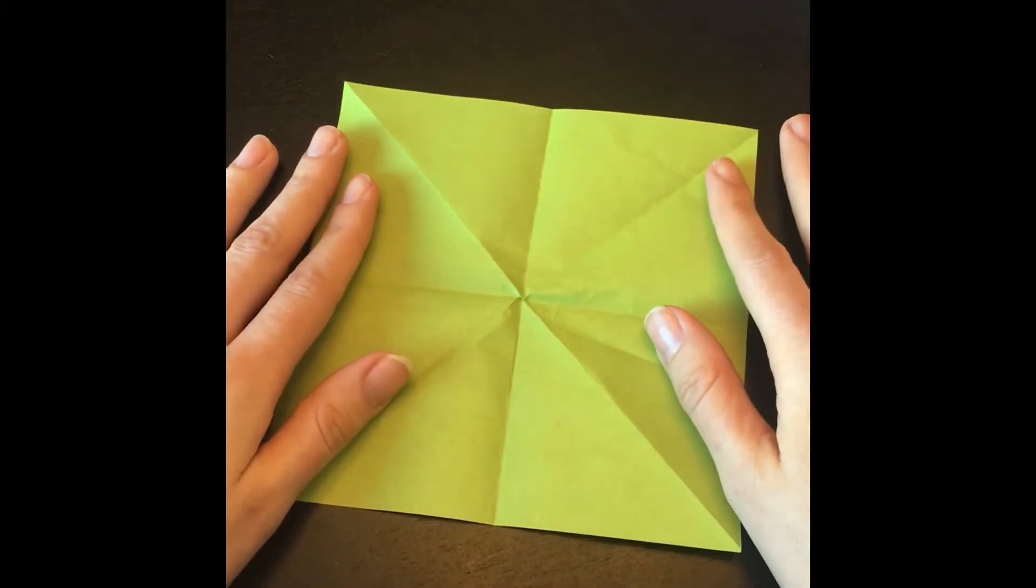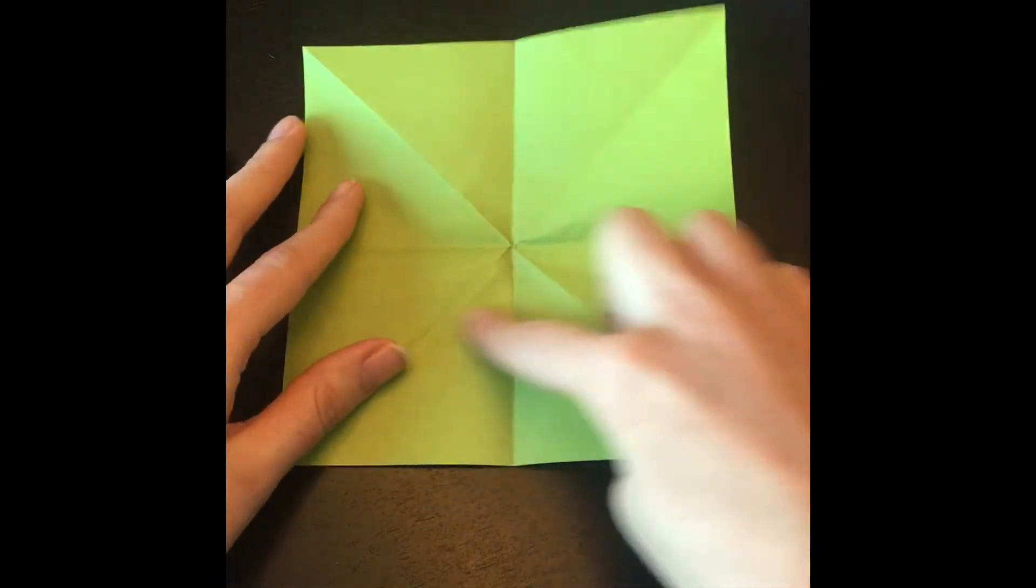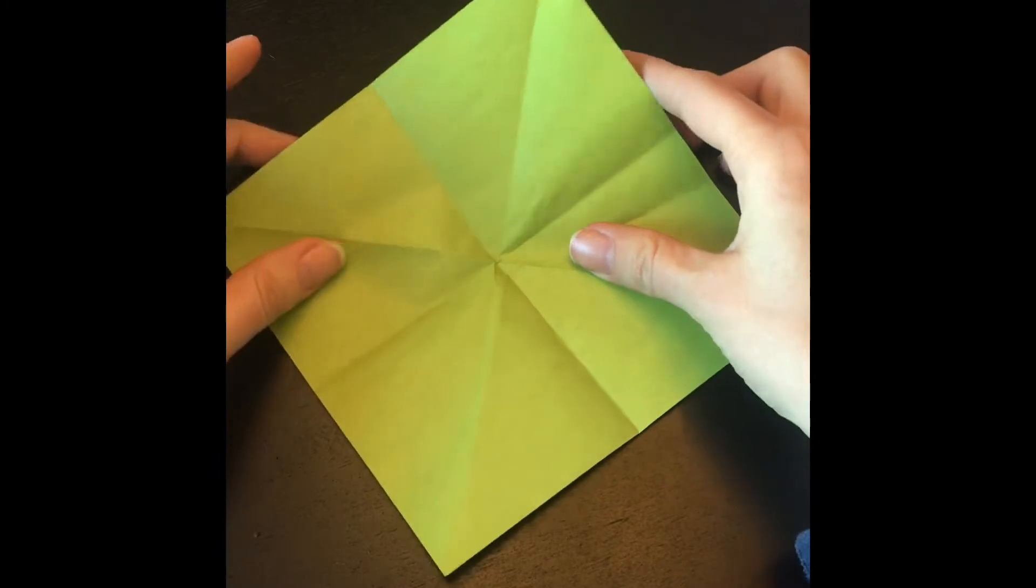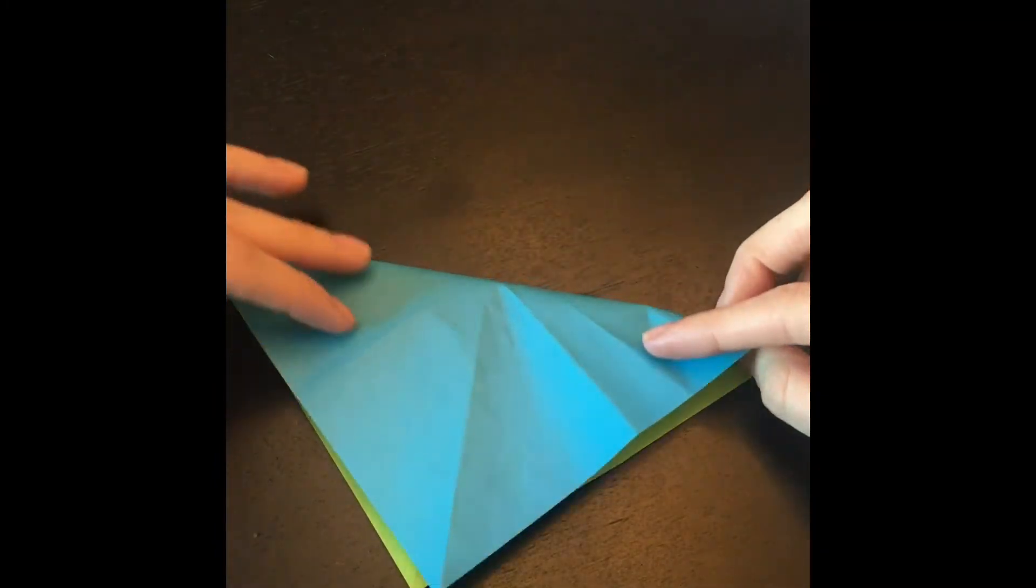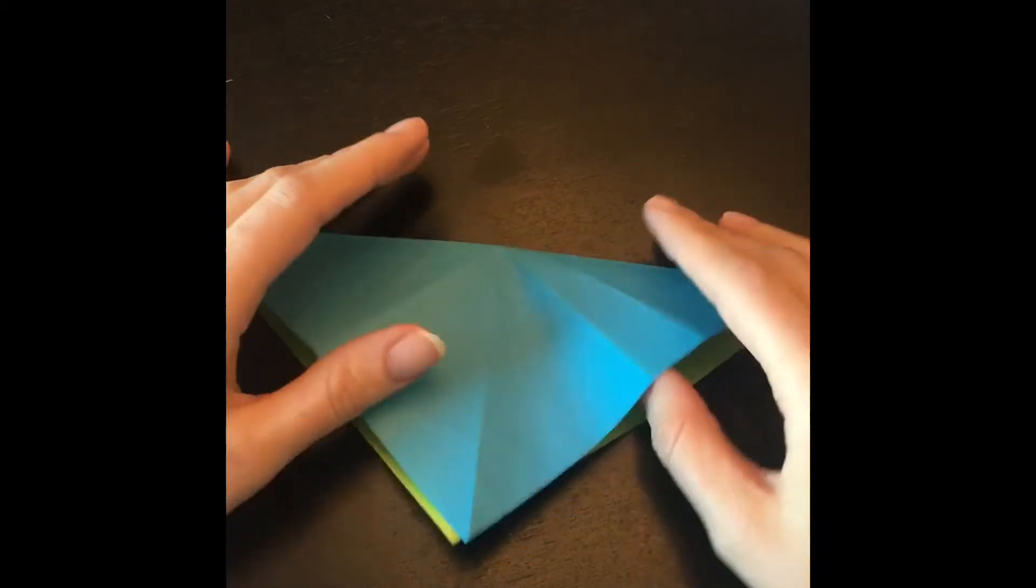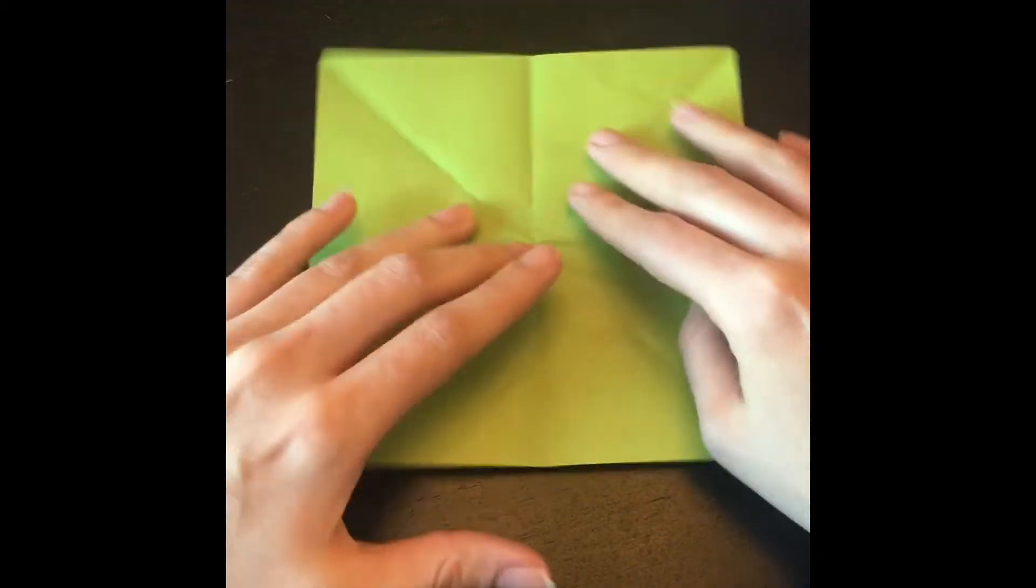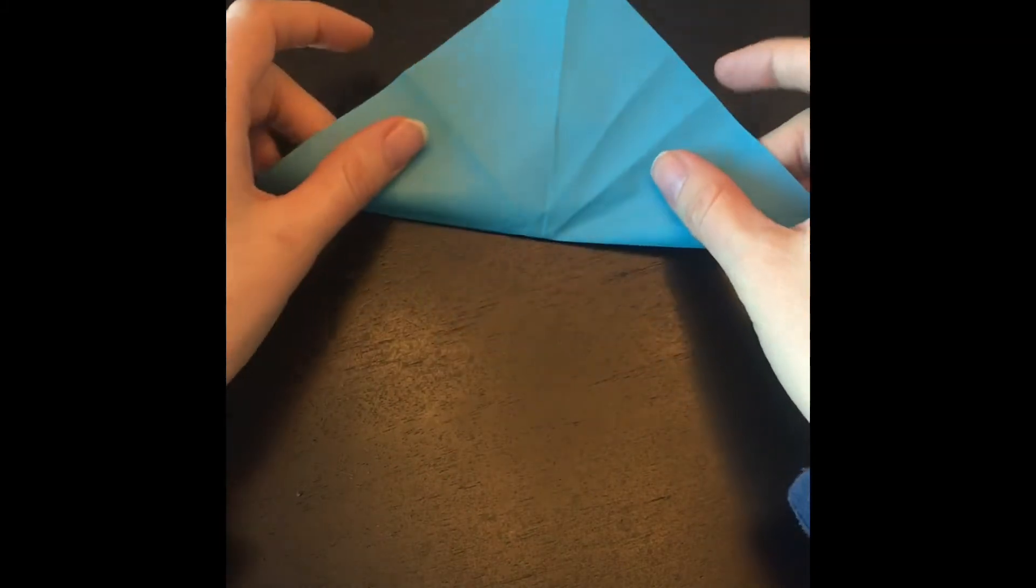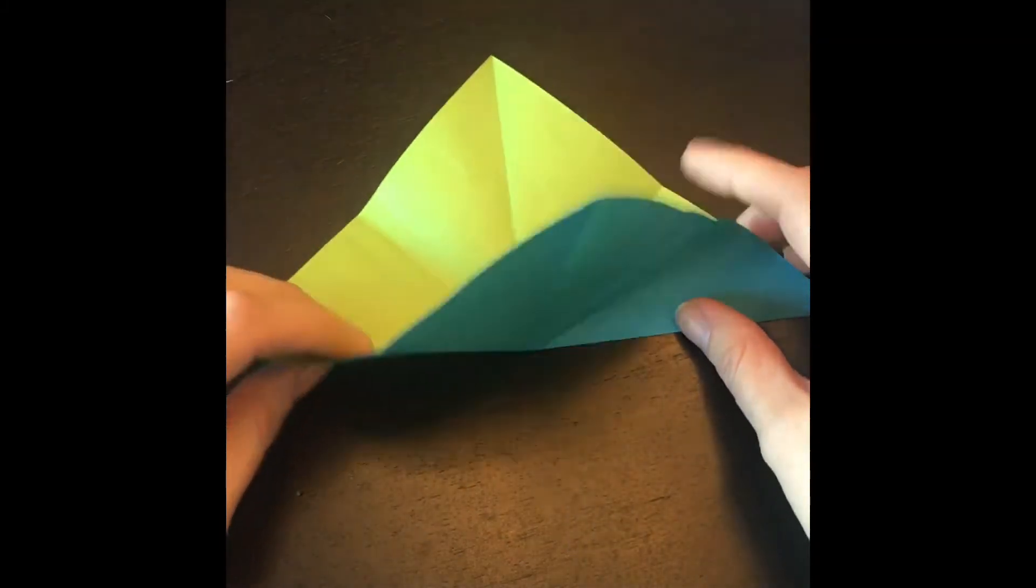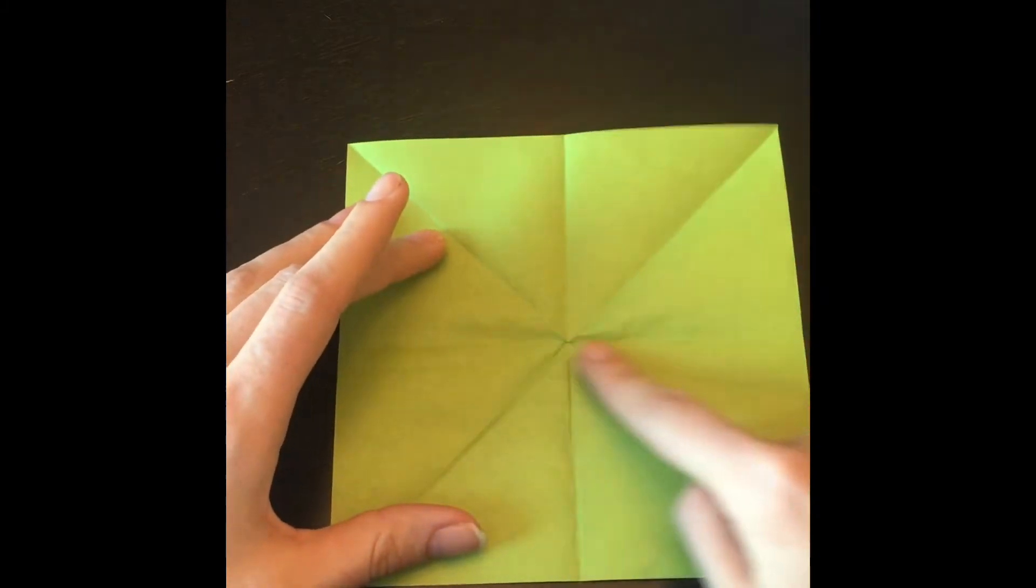So the first thing we're going to do is we're going to get the X going on our origami. So we will fold it down, and then you're going to open it back up, and you'll do the other side. Open it back up, and then we want to get the line going through the middle.